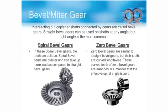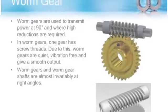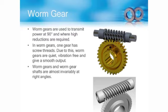A worm gear is a gear consisting of a shaft with a spiral thread that engages with and drives a toothed wheel. A worm gear can have a massive reduction ratio, and thus we can easily greatly increase torque or greatly reduce speed. Applications of worm gears include gearboxes and fishing pole reels.